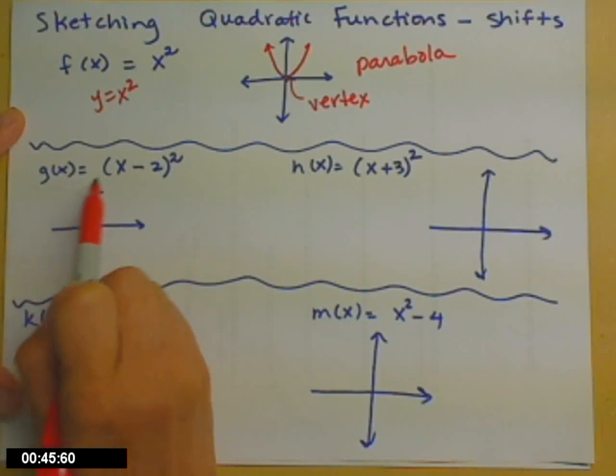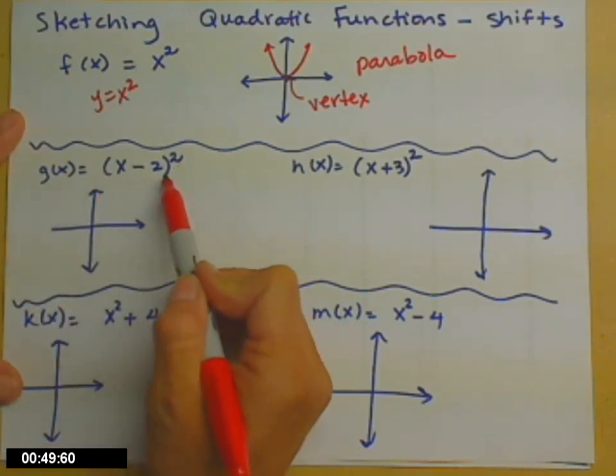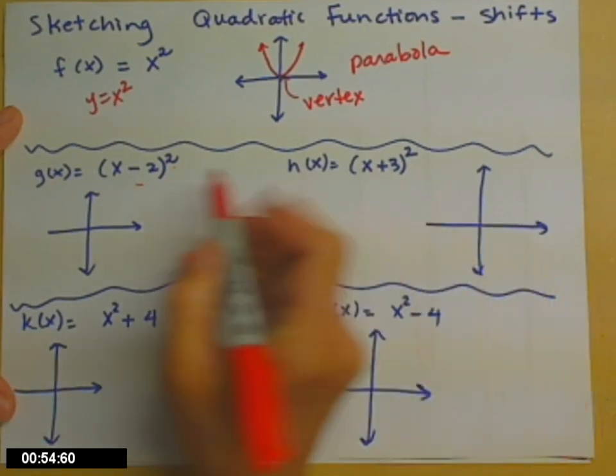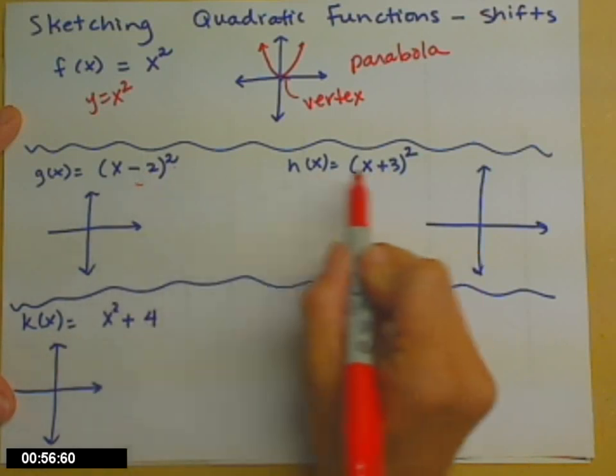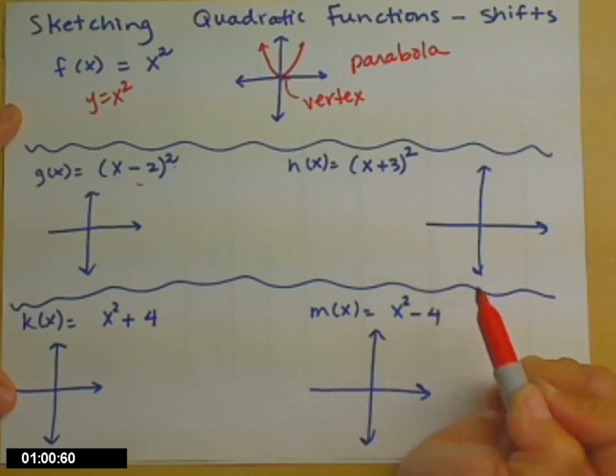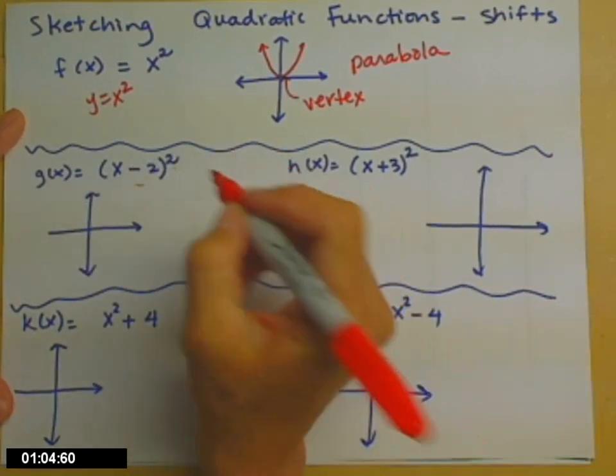The first one we're going to do, g(x) equals (x minus 2) quantity squared. If you have a minus 2 inside the parentheses with the x, that's a move left or right. So inside, g and h here have numbers inside the parentheses with the x. Those are shifts left or right. It's not intuitive. In fact, it's counterintuitive.